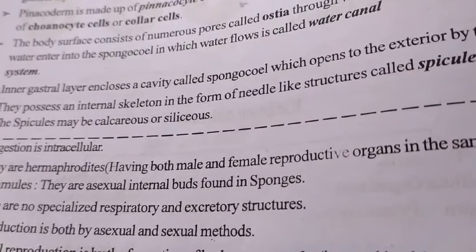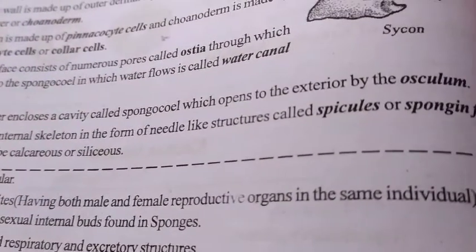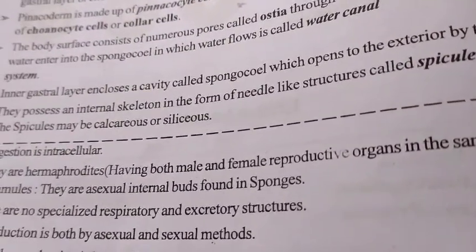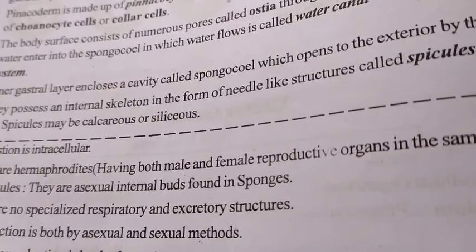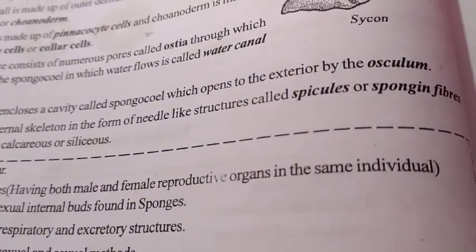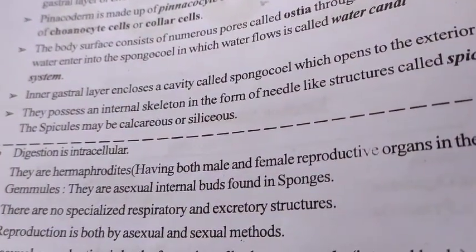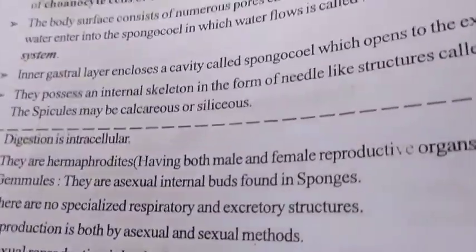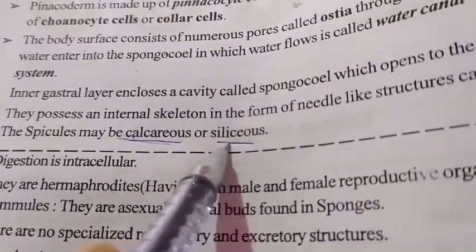The inner gastral layer encloses a cavity called the spongocoel, which opens to the exterior by the osculum. Sponges possess an internal skeleton in the form of needle-like structures called spicules or spongin fibers. The spicules may be calcareous or siliceous — these are the minerals they are made up of.